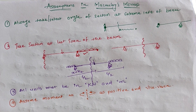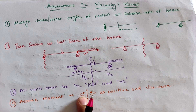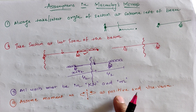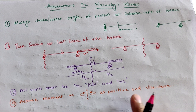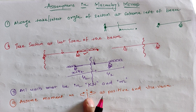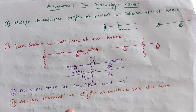The fourth assumption is to treat the moment as positive when it is clockwise on the left-hand side of the section and anti-clockwise on the right-hand side. Vice versa — anti-clockwise on the left-hand side and clockwise on the right-hand side — is treated as negative.